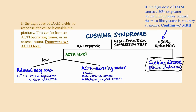To summarize the algorithm: if a patient suppresses on the high-dose test, they have an adenoma and you need to localize it with an MRI. If there's no response, you check the ACTH level. Low ACTH means negative feedback — cortisol is coming from the adrenal glands, indicating primary hypercortisolism. High ACTH means the ACTH is driving the process — a secondary or ectopic cause.